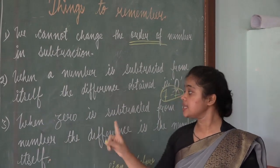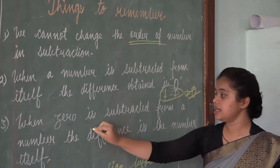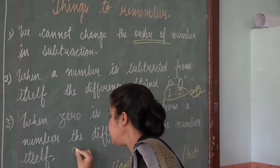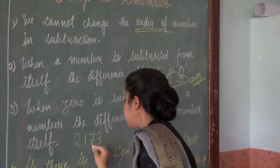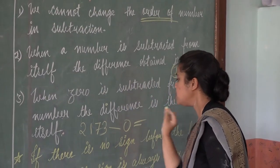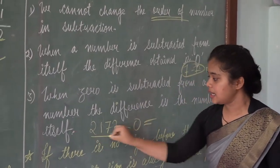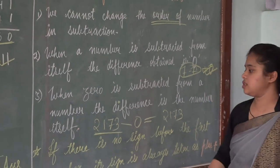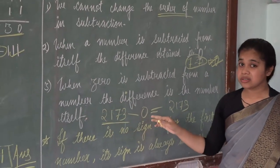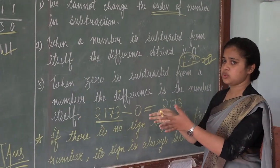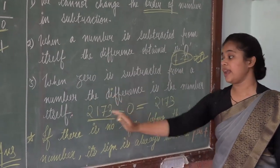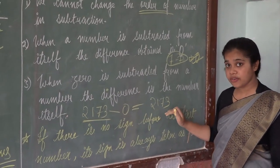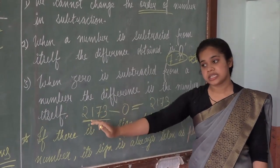When 0 is subtracted from a number, the difference is the number itself. Like, if I write 2,173 minus 0, the result is the number itself — 2,173. So if you get such questions in fill-in-the-blanks, you don't need to show the working. When we subtract 0 from a number, the result is the number itself.